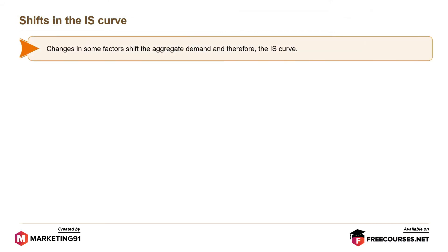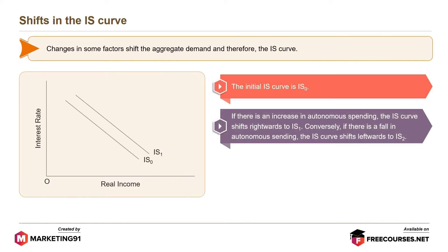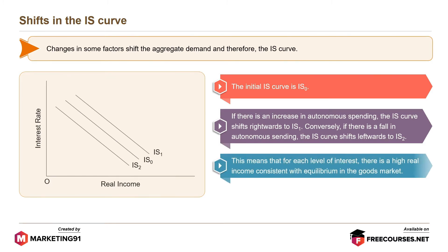Changes in some factors shift the aggregate demand and therefore the IS curve. The initial IS curve is IS0. If there is an increase in autonomous spending, the IS curve shifts rightwards to IS1. Conversely, if there is a fall in autonomous spending, the IS curve shifts leftward to IS2. This means that for each level of interest, there is a higher real income consistent with equilibrium in the goods market.